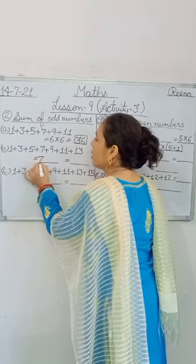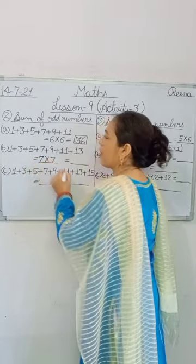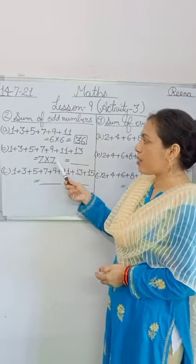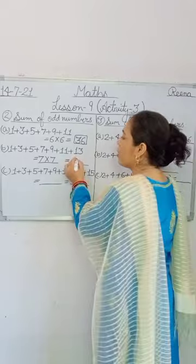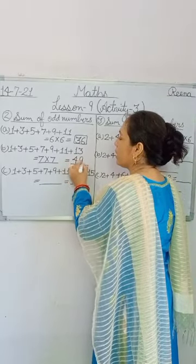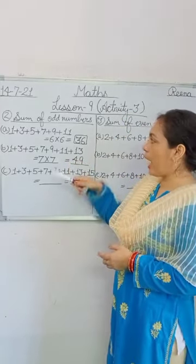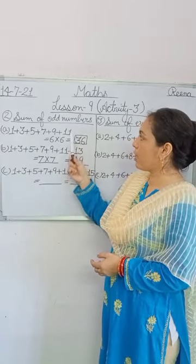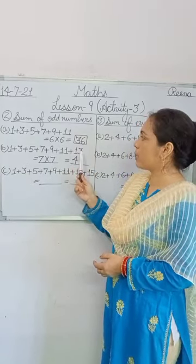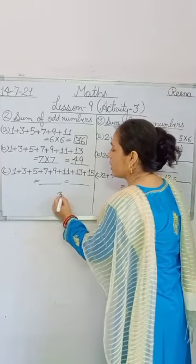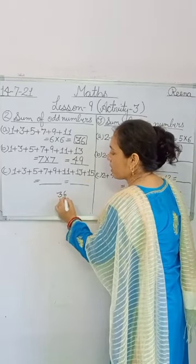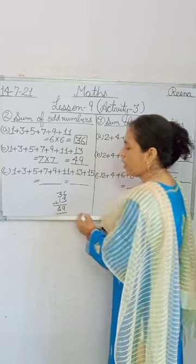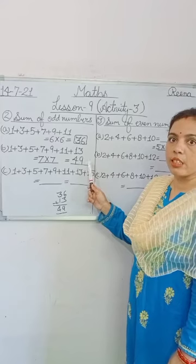So right here, 7 multiplied by 7 according to your pattern. Now 7 sevens are 49. And add your numbers: from 1 to 11 the addition is 36. Now 36 plus 13 is: 6 plus 3 is 9, 3 plus 1 is 4, that means 49. Your correct answer is 49.